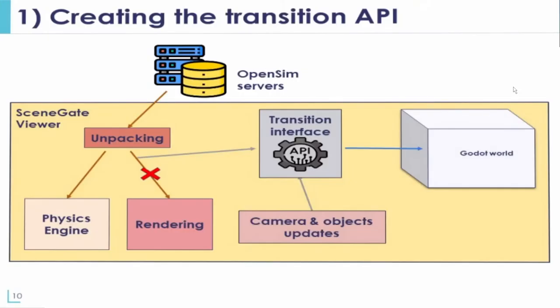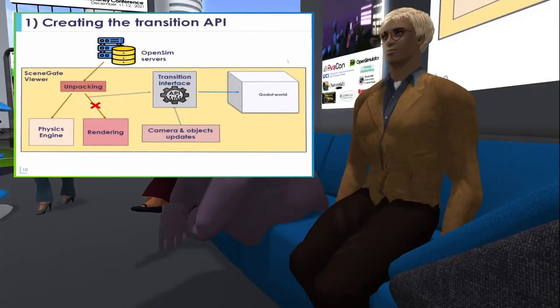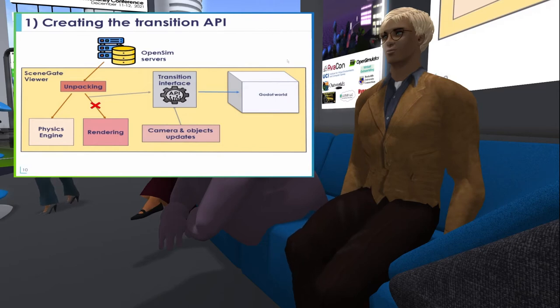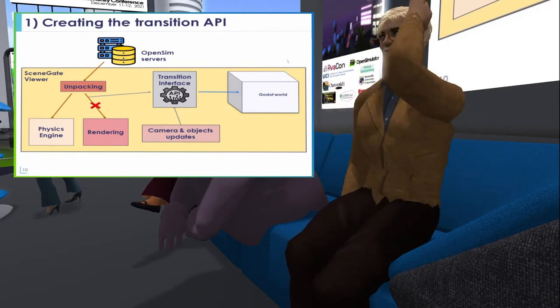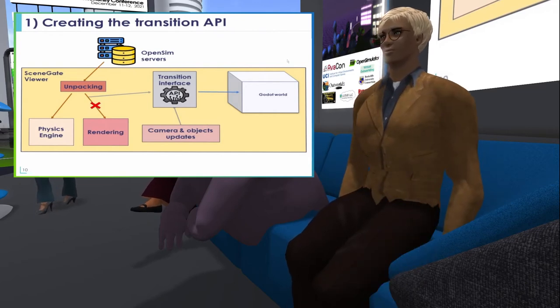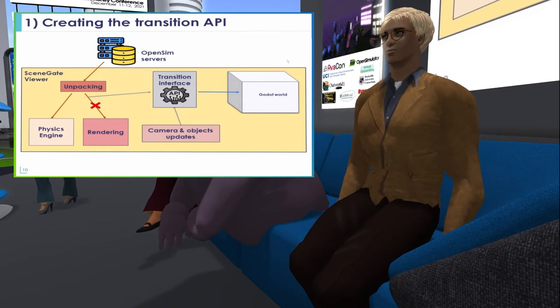The elements from SceneGate are sent by the server, unpacked inside the viewer, and sent into the rendering. What we want to do is intercept those entities before they go into the rendering and pass them through our API, which converts them into objects created inside our Godot world. All updates of the camera and objects also go through the API into the world, so every change happening in real time will happen simultaneously in the Godot world. We've had some successful tests of creating objects sent by the server inside the Godot world, but there is still a lot more to be done.